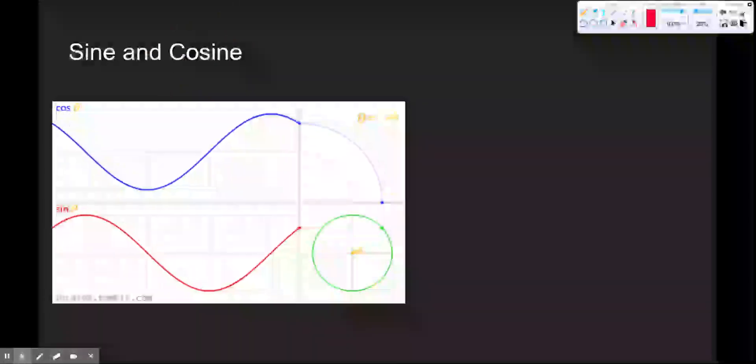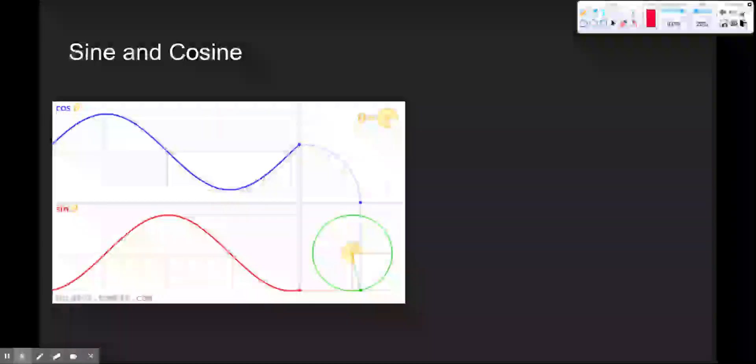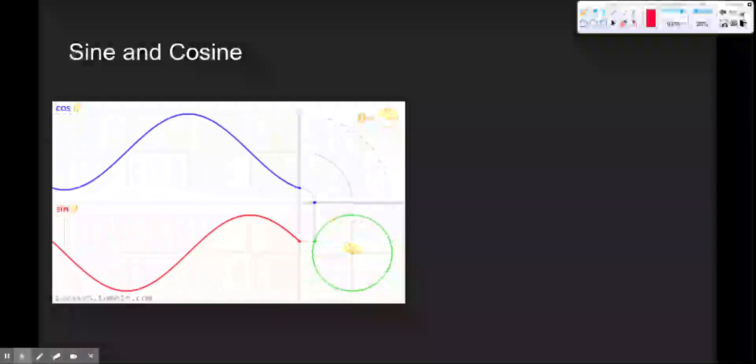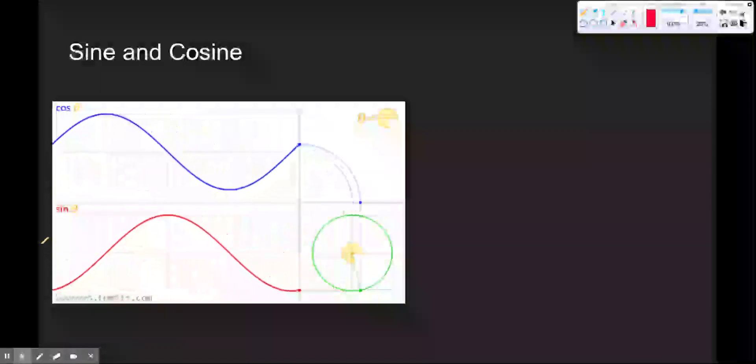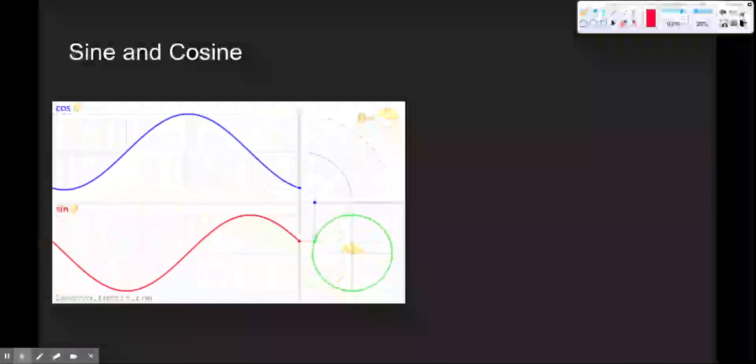As you can see on this graph here, the cosine values are coming from the x coordinate. So you can see that it is the horizontal distance from the center, while the sine values are coming from the y coordinate, which is the vertical distance from the center.